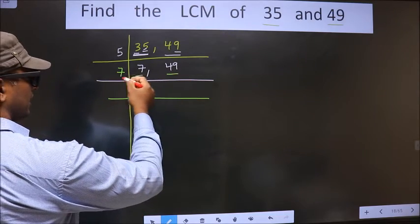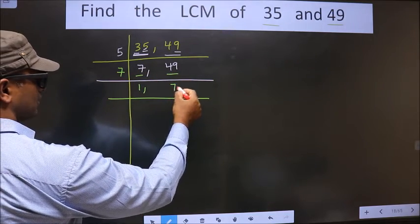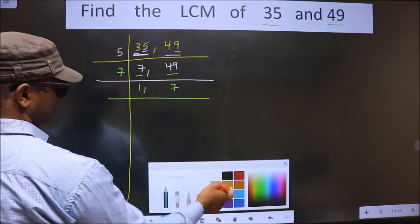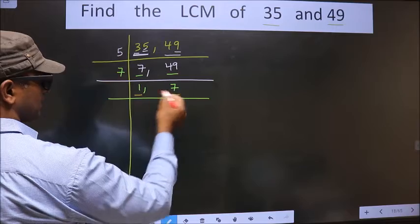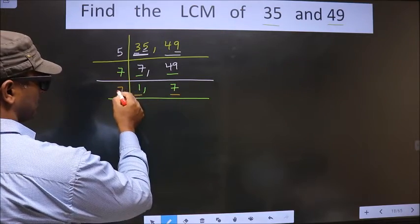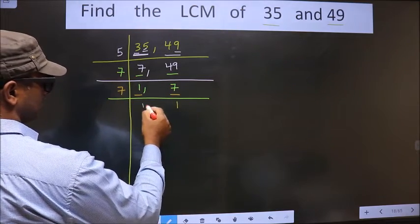So now when do we get 49 in 7 table? 7 times 7 is 49. So now here we got 1, so you focus on the next number that is 7. 7 is a prime number, so you take 7 once.